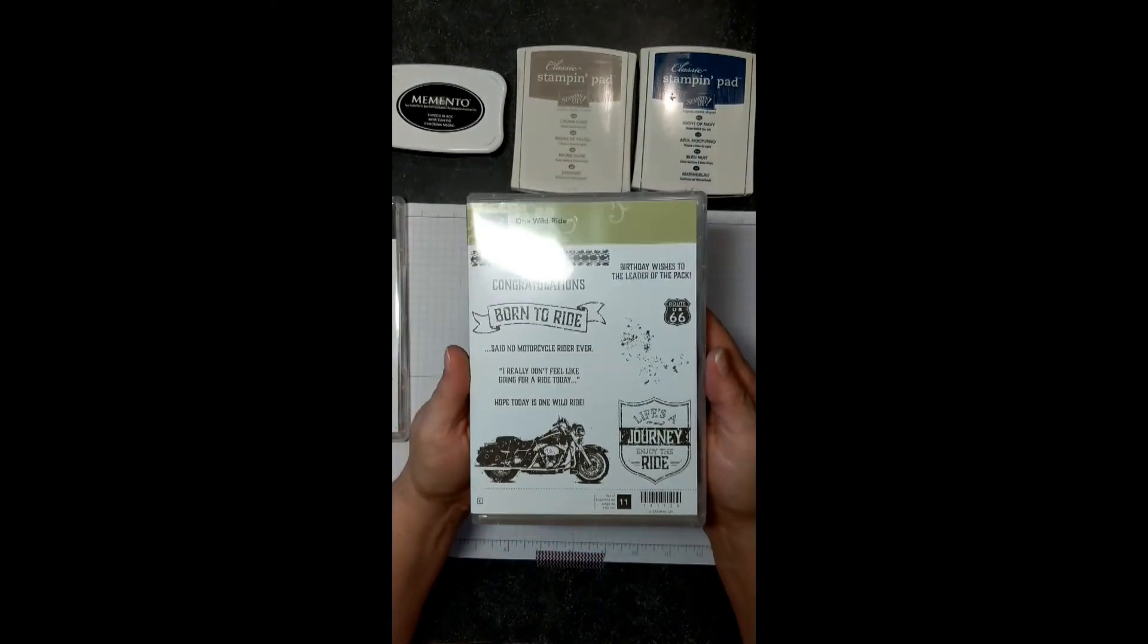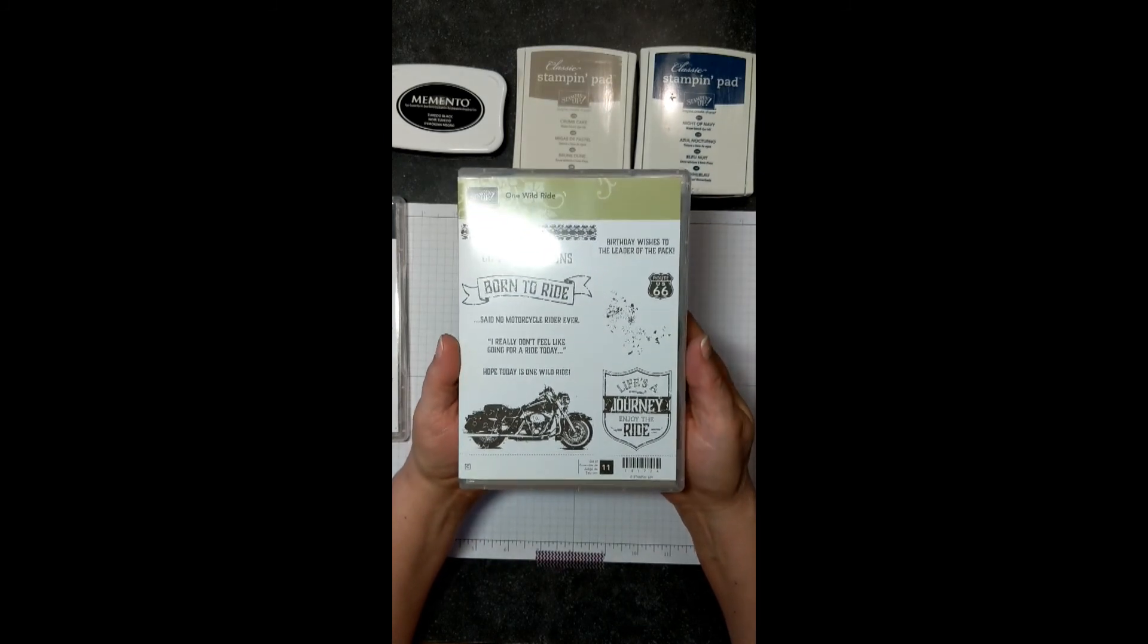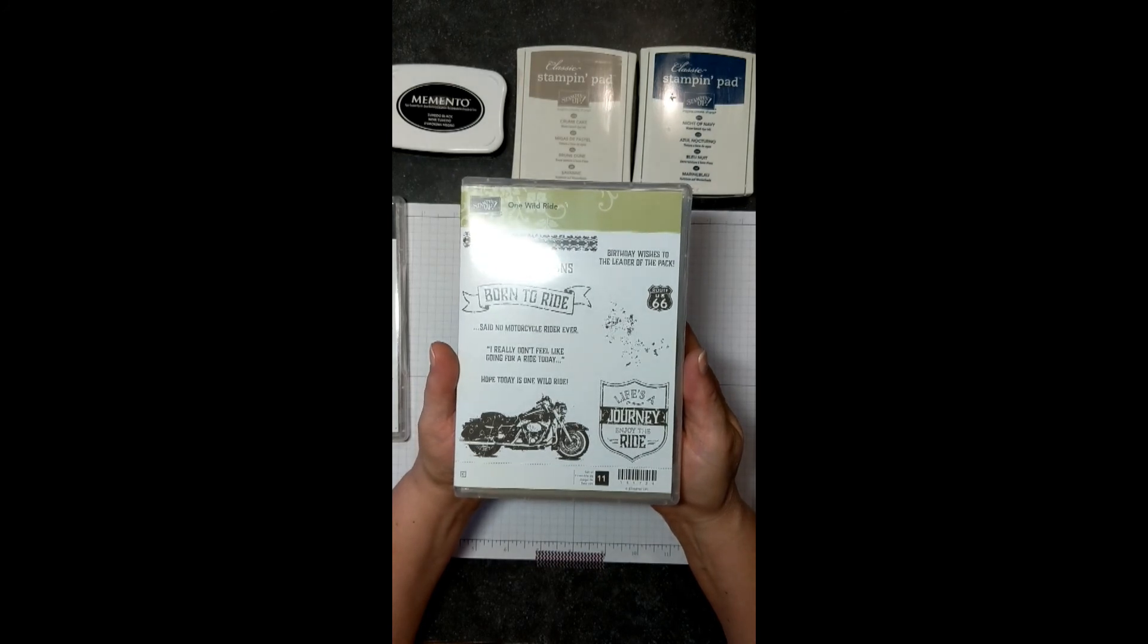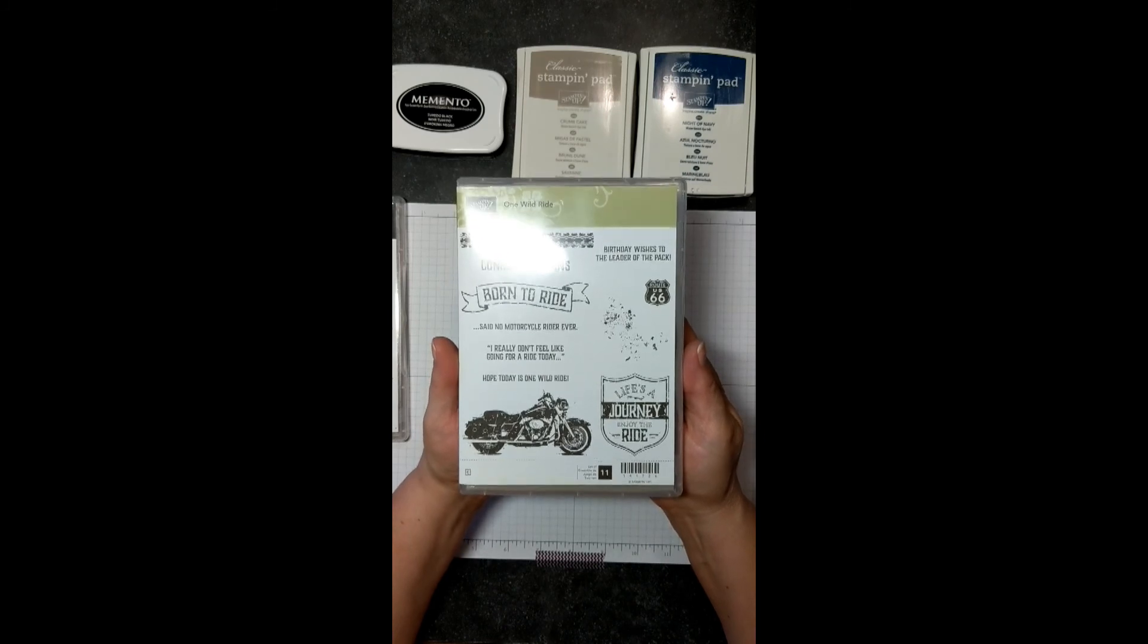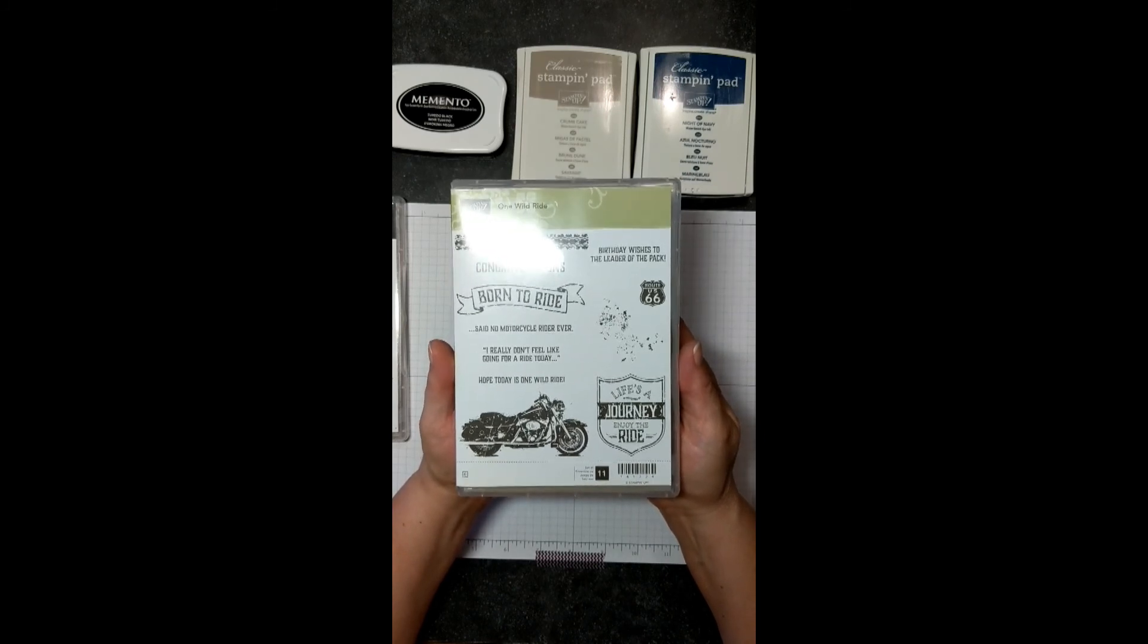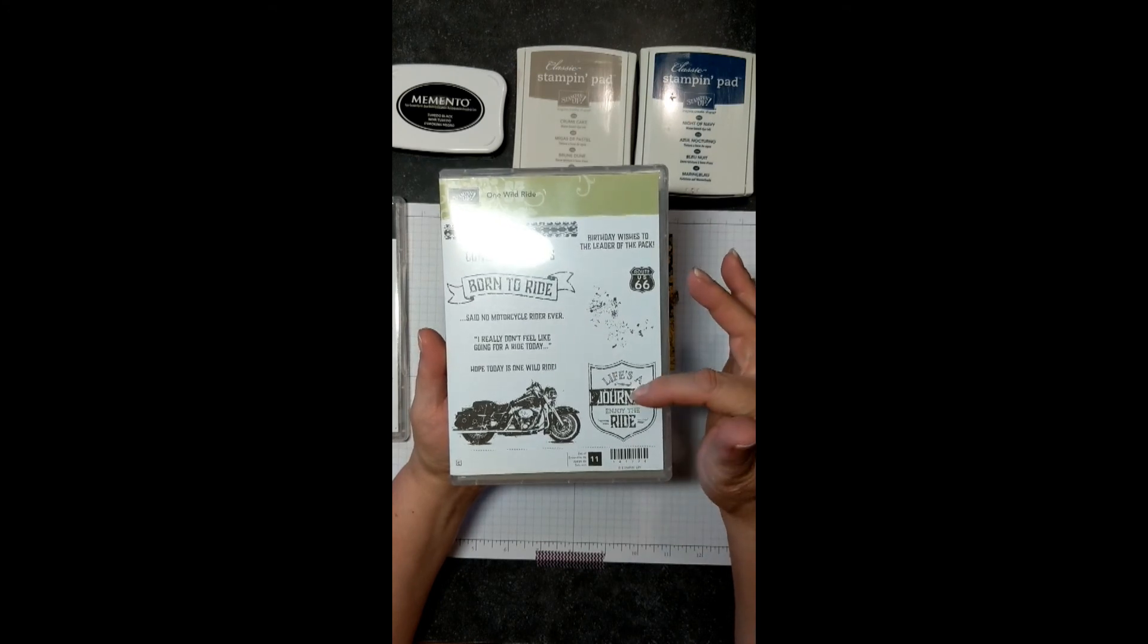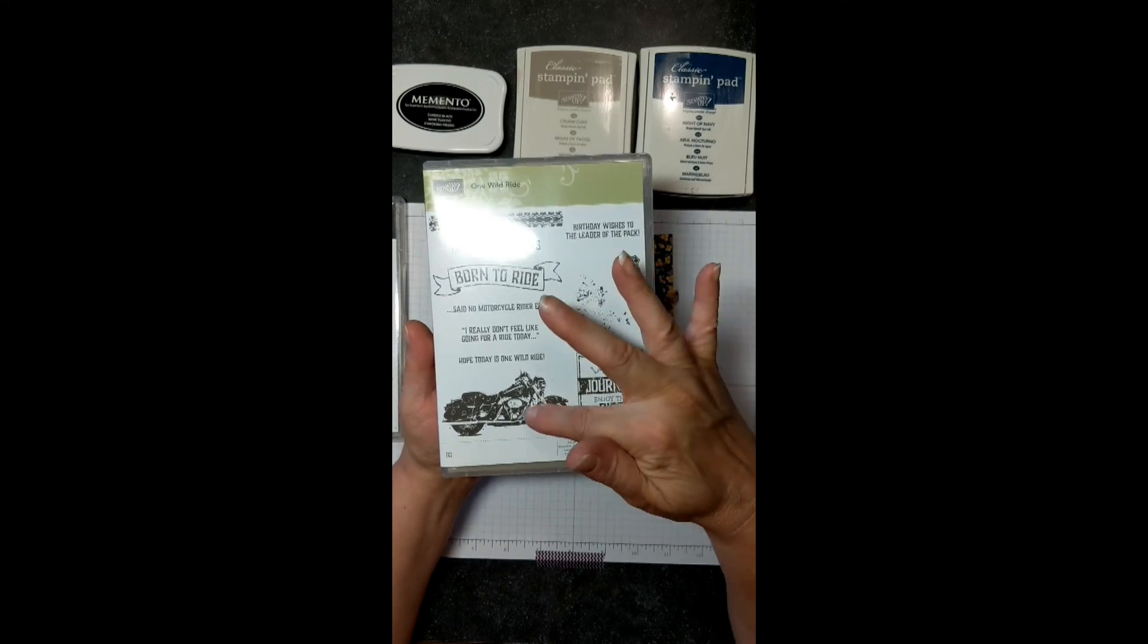And then we're going to be using One Wild Ride. This is a great set, and sometimes it is really hard to make it more feminine. I have a lot of girlfriends who have their own bikes, so I want to make them a card, but I still want it to feel a little bit more girly. We'll be using Born to Ride, Route 66, and the bike itself.